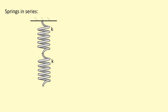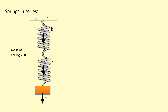Now we have two identical springs connected in series. I'm going to hang a mass which applies a force F to the system. In this case, the force on each spring is F. We're making the assumption that the mass of the springs is negligible. So if each one gets a force F and each has spring constant k, each will extend by delta-l, making the total extension 2 delta-l.